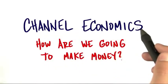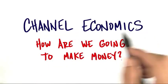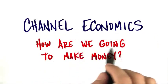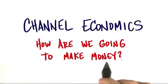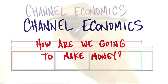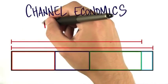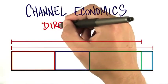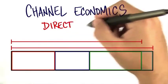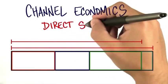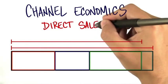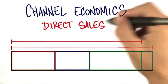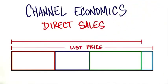Let's take a look at the channel economics — in other words, how are we going to make money? Let's take a look at a direct sales example. You have a sales force and you're selling directly to the end consumer. Let's assume that the list price of your product is $100.